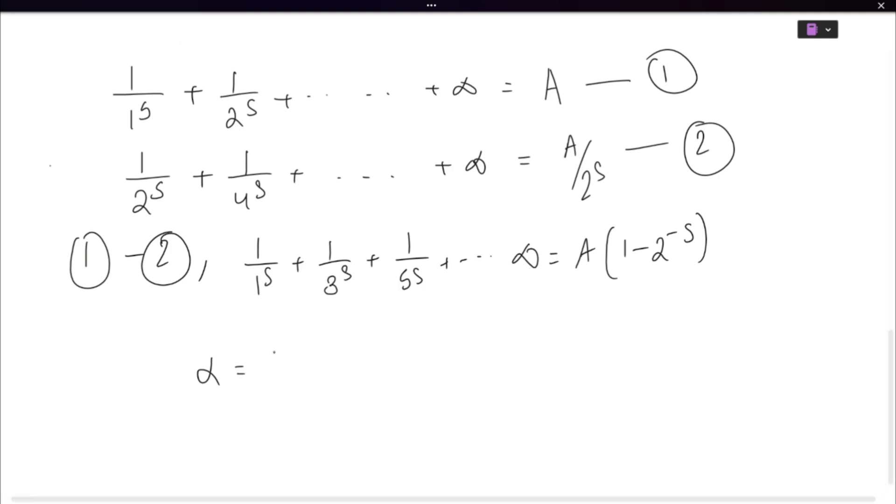So alpha is going to be A, which is pi to the power 4 by 90 whole into 1 minus 2 to the power minus 4. And beta would be simply pi to the power 4 by 90 whole into 1 upon 2 to the power 4.